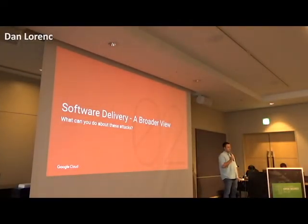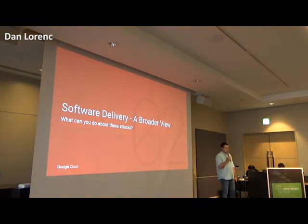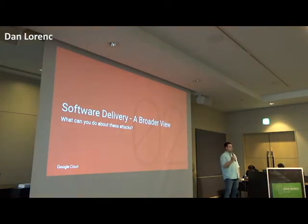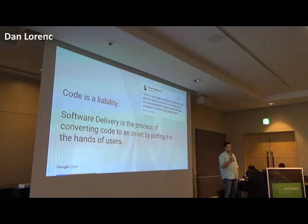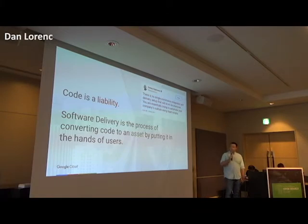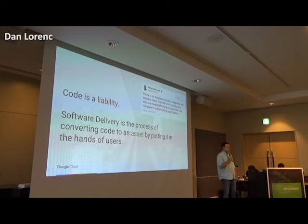So how do we fix this, and what does software delivery and the Continuous Delivery Foundation have to do with it? All these things are attacks on supply chains. Supply chains are basically how we handle software delivery — the process of getting code from ourselves to our users. From a business perspective, code is actually a liability. Just like physical goods in a warehouse, things can get damaged. Code doesn't add business value until it's delivered into the hands of customers. That's where software delivery comes in — converting code in a Git repository to something useful that customers can make use of.